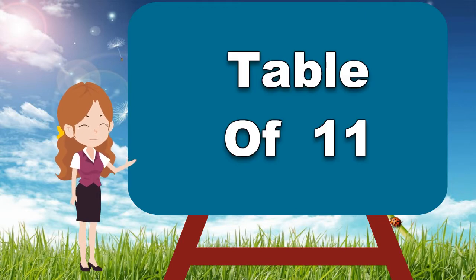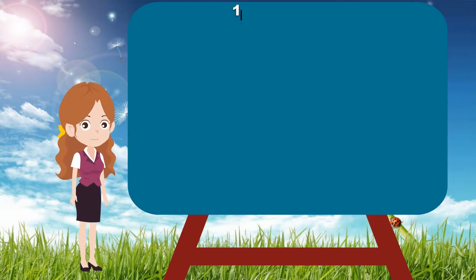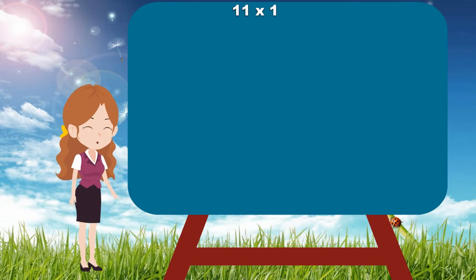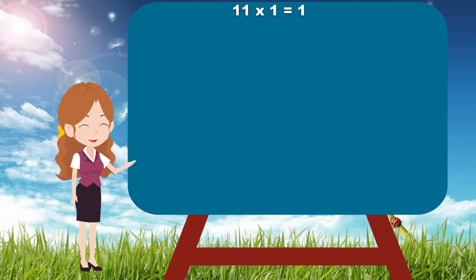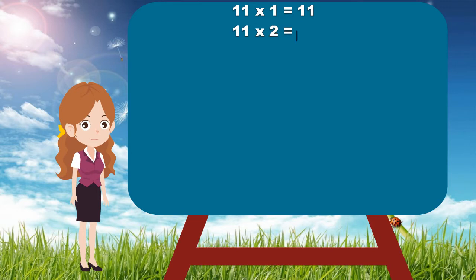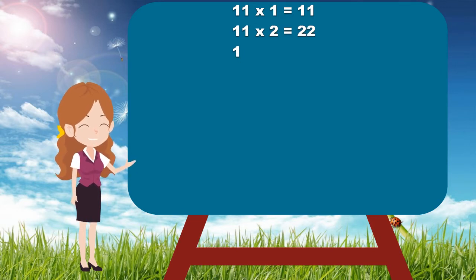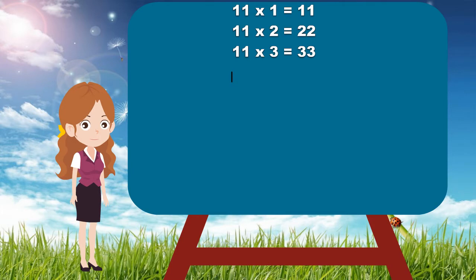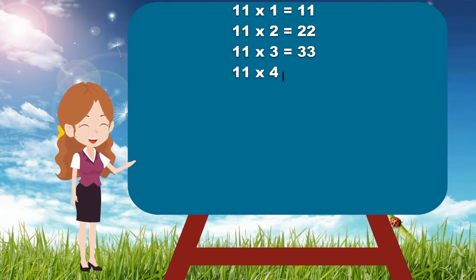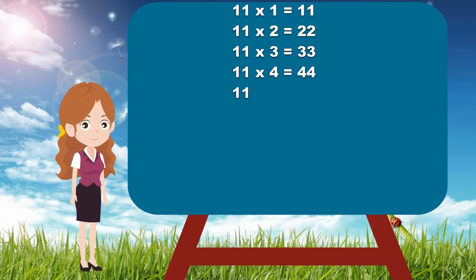Let's start. 11 ones are 11. 11 twos are 22. 11 threes are 33. 11 fours are 44. 11 fives are 55.